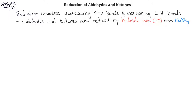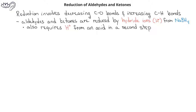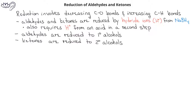A second step in the reaction involves addition of an acid as a source of hydrogen cations. Aldehydes undergoing reduction can be converted to primary alcohols, whereas ketones undergoing reduction would be converted to secondary alcohols.